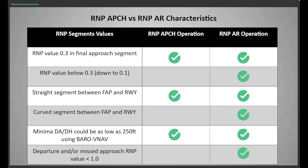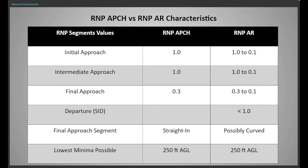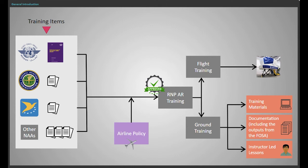This table compares RNP approach with RNP AR navigation specifications — you need to know what the differences are. Comparing RNP navigation specifications for RNP approach with RNP AR across the different segments of approach, missed approach, and departure, the training items are defined in the respective guidance material or regulation, for example the ICAO PBN manual, FAA AC, EASA air operations, or other national regulations. A flight crew training program is developed by the operator, proportionate to the complexity of the intended operation.